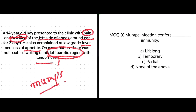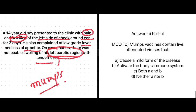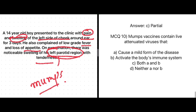Mumps infection confers what type of immunity: lifelong immunity, temporary immunity, partial immunity, or none of the above? It confers lifelong immunity. The mumps vaccine contains live attenuated viruses that cause a mild form of the disease and activate the body's immune system. The correct answer is C — both A and B.